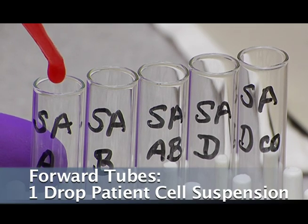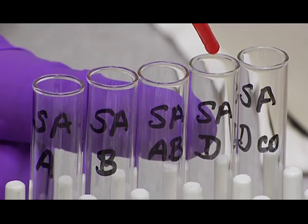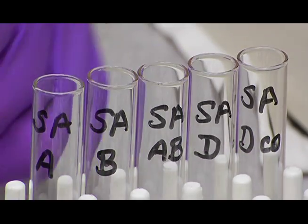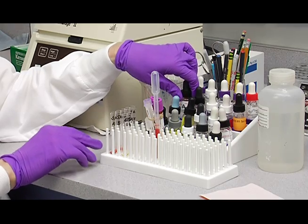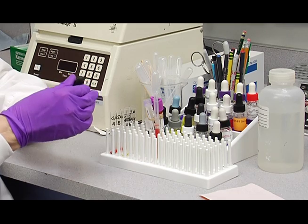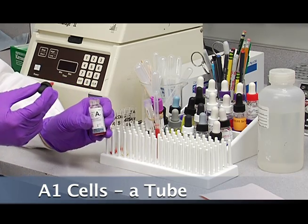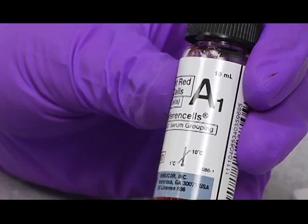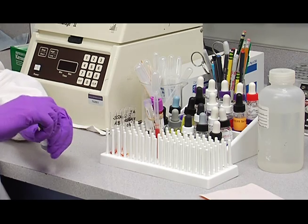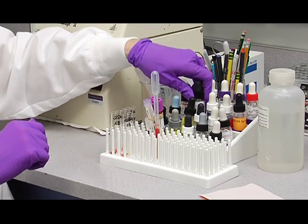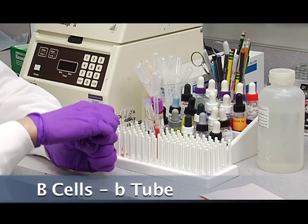Add one drop of patient cell suspension to each of your forward tubes. Then after adding cells to your forward, we're going to add reagent cells, A and B cells, to the reverse tubes. So we're going to add A1 cells to the A tube. I'm going to add B cells to the reverse B tube.